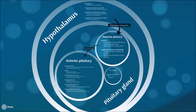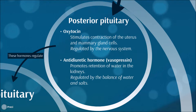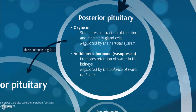In the posterior lobe we find two principal hormones: oxytocin and the antidiuretic hormone (ADH), also called vasopressin. Oxytocin is a peptide that stimulates the contraction of the uterus and mammary gland cells, and it is regulated by the nervous system. The antidiuretic hormone is a peptide that promotes retention of water in the kidneys and it is regulated by the balance of water in cells.